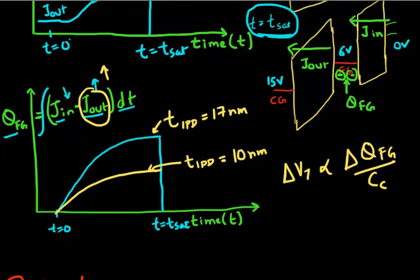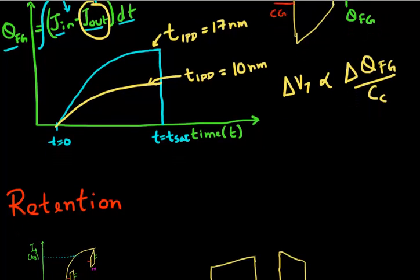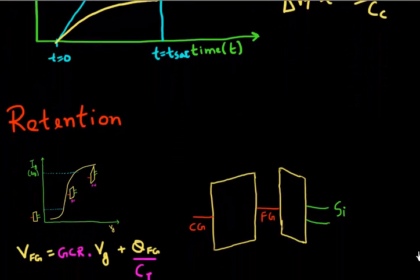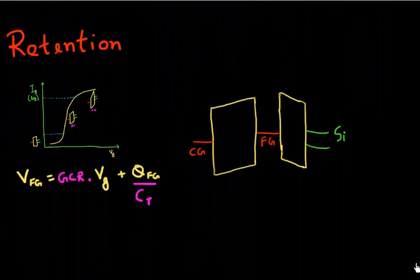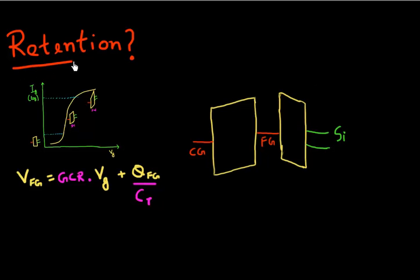So the other thing that comes, the next big question to ask is: I have stored this charge in my floating gate, but how do I retain it? So a key metric for all non-volatile memories is retention. That is how long you can retain the state of your cell. So let's come back to our friends, the tunnel equation and my capacitive coupling.